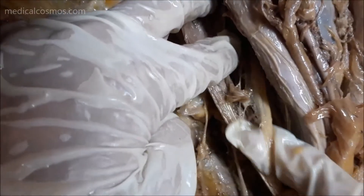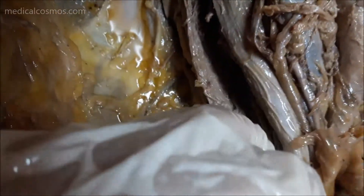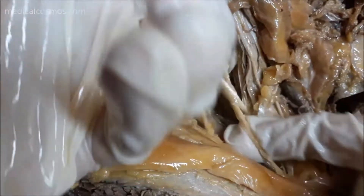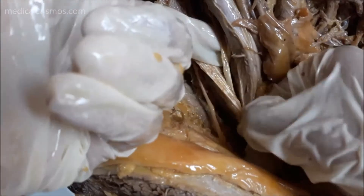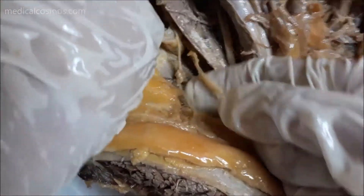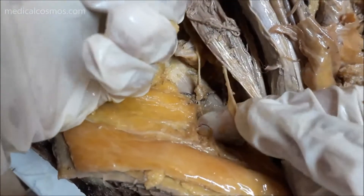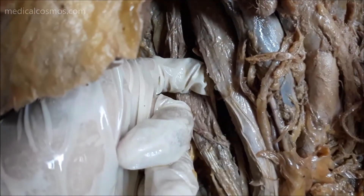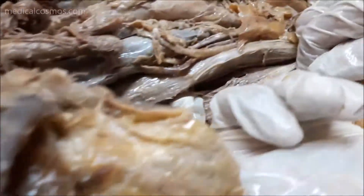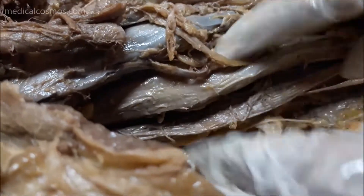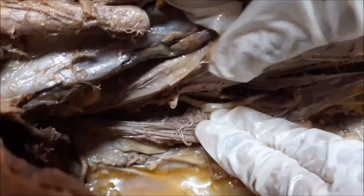Here is another nerve coming from the lumbar plexus. You can also confirm it by pushing and pulling through the substance. Now let us look at a diagrammatic image — you can pause the video and observe how many nerves there are and how they are arranged. Coming back to the dissection, you can see the basic perspective of the lumbar plexus and how the nerves are traversing it.